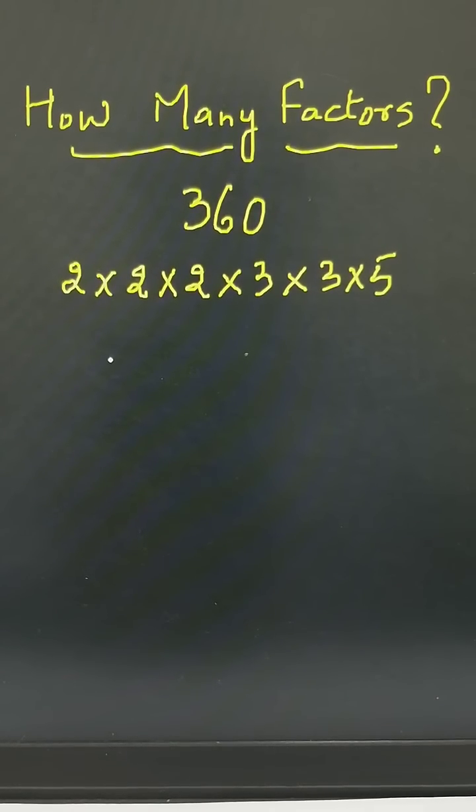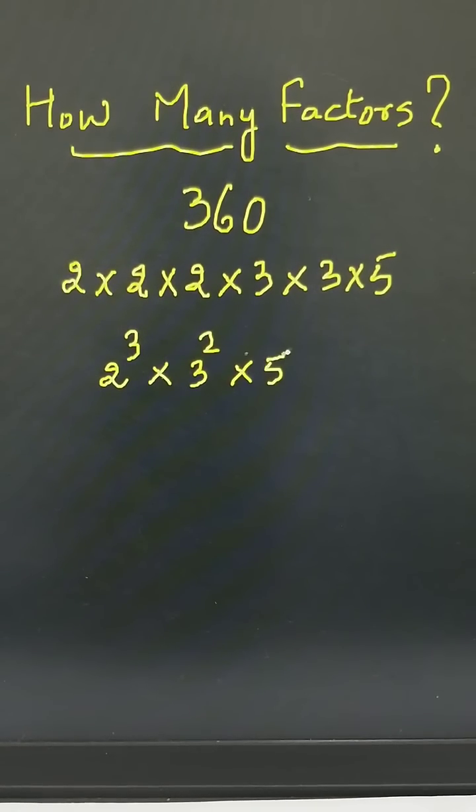So, if you write all these factors in exponential form, this is 2 raised to power 3, 3 raised to power 2 and 5 raised to power 1.